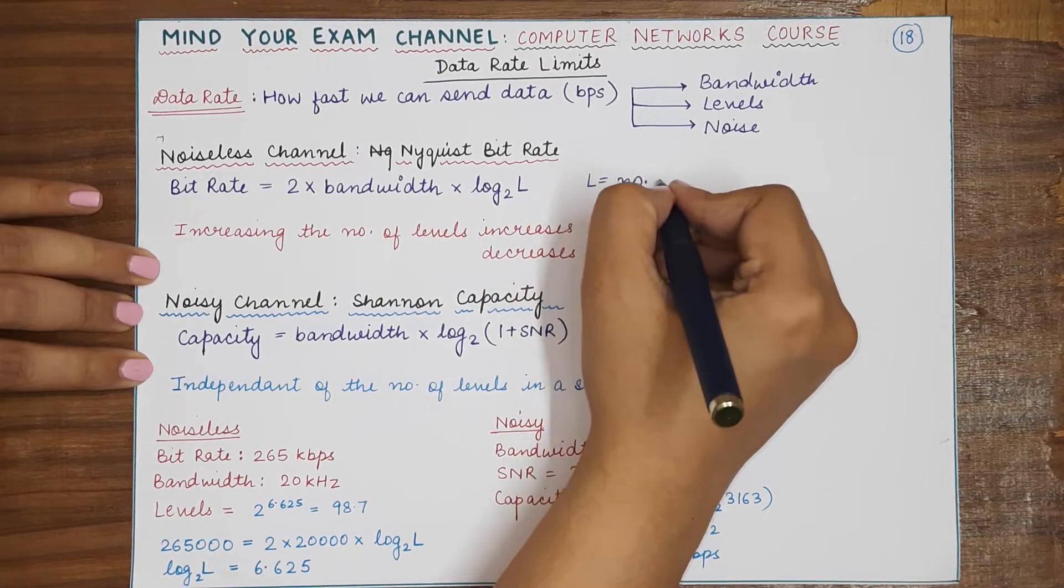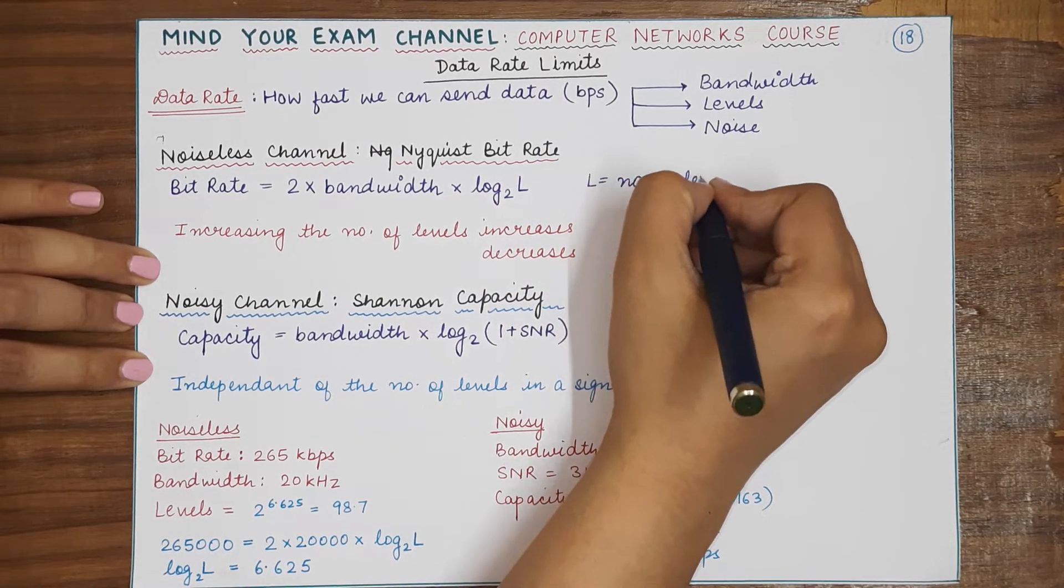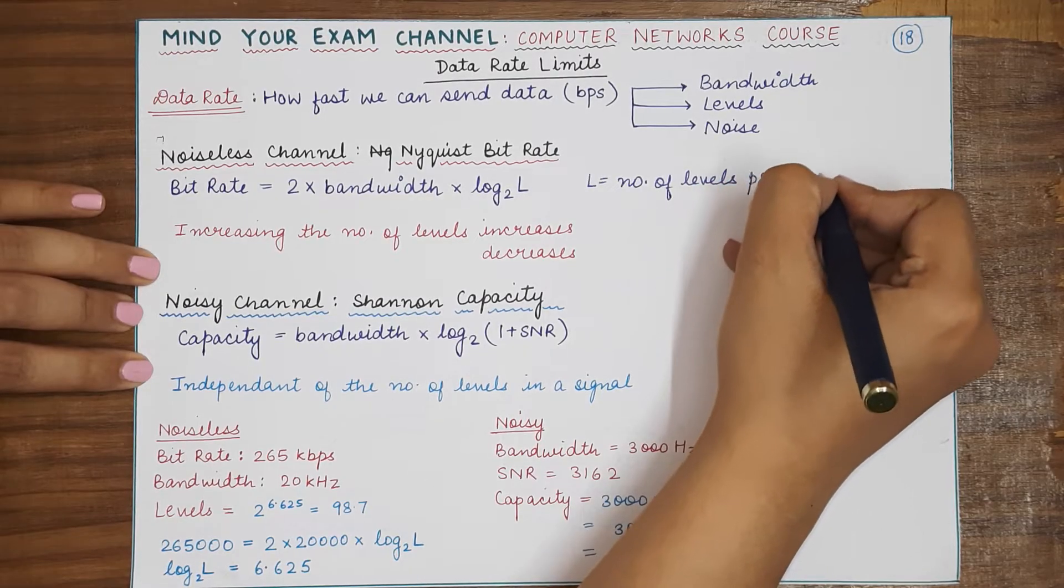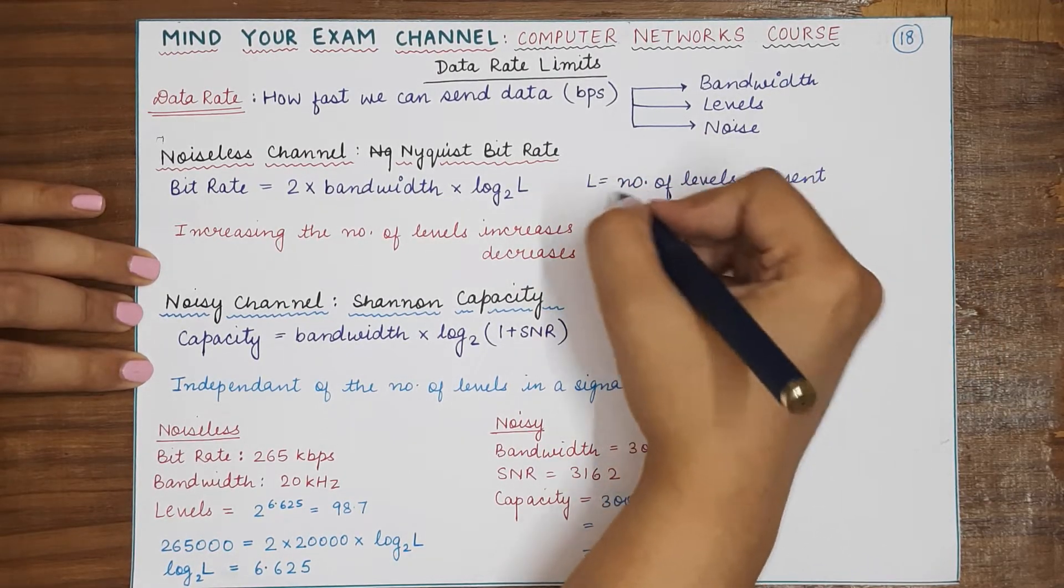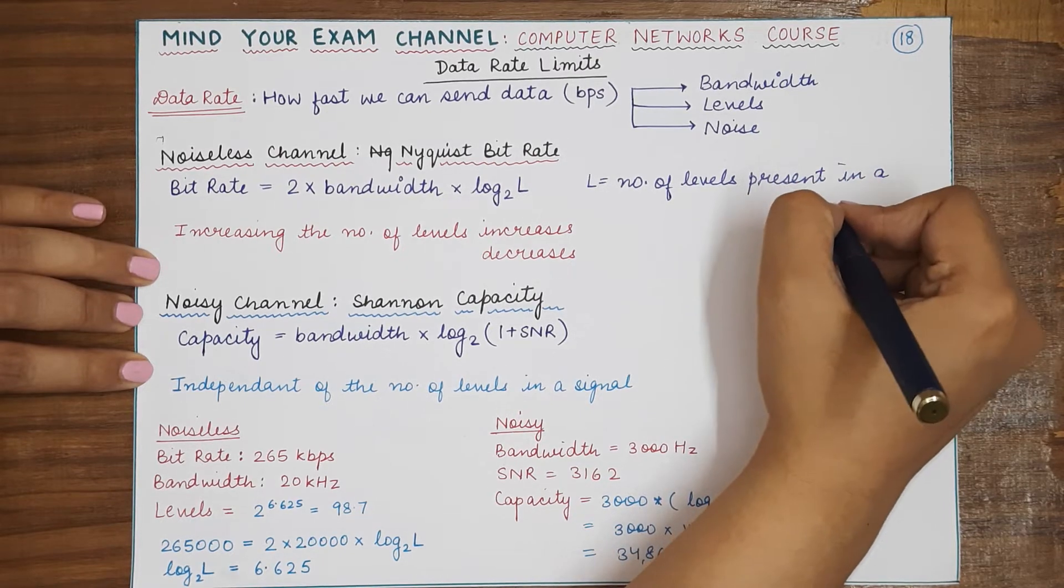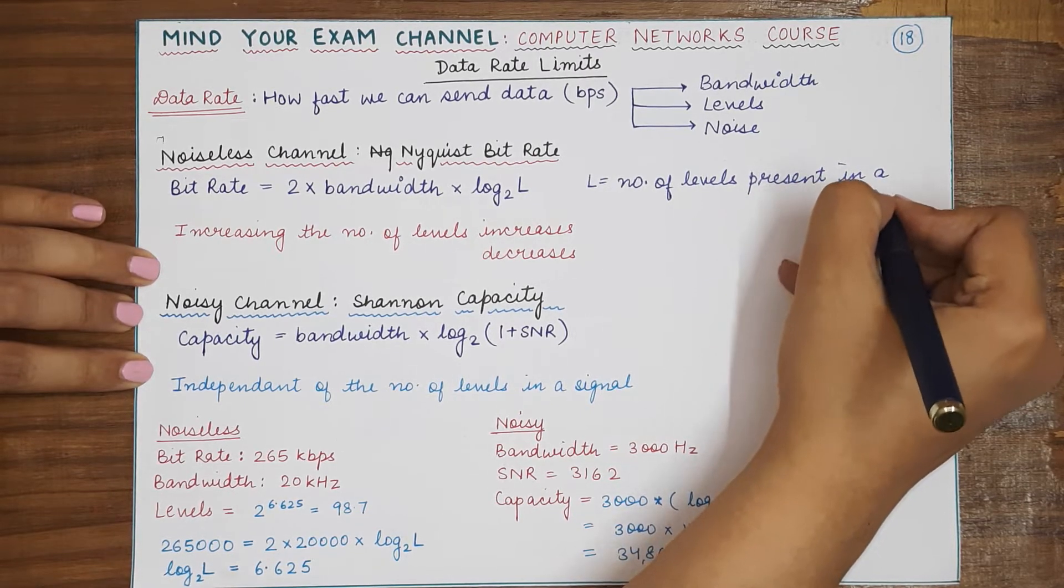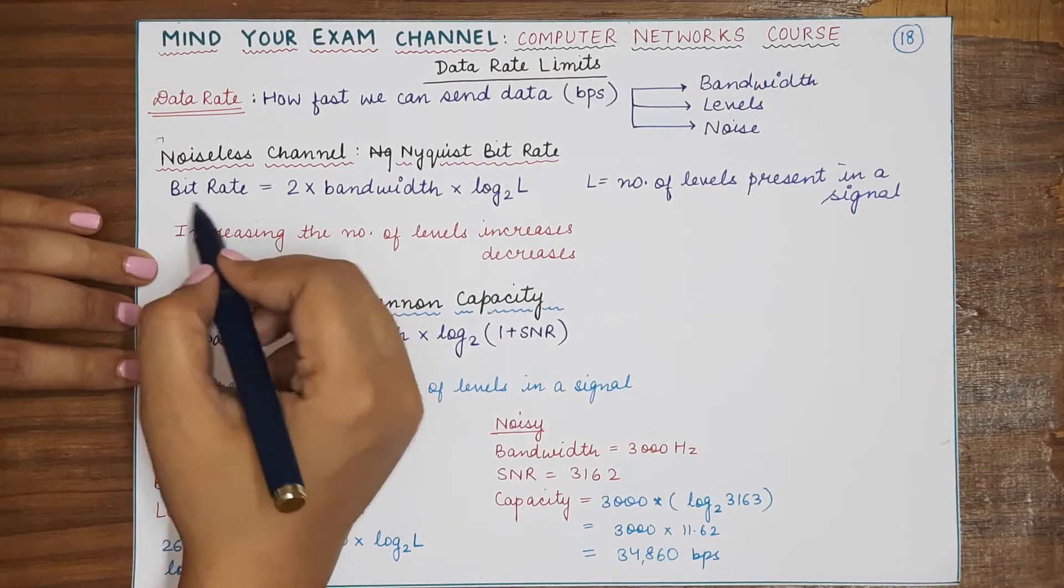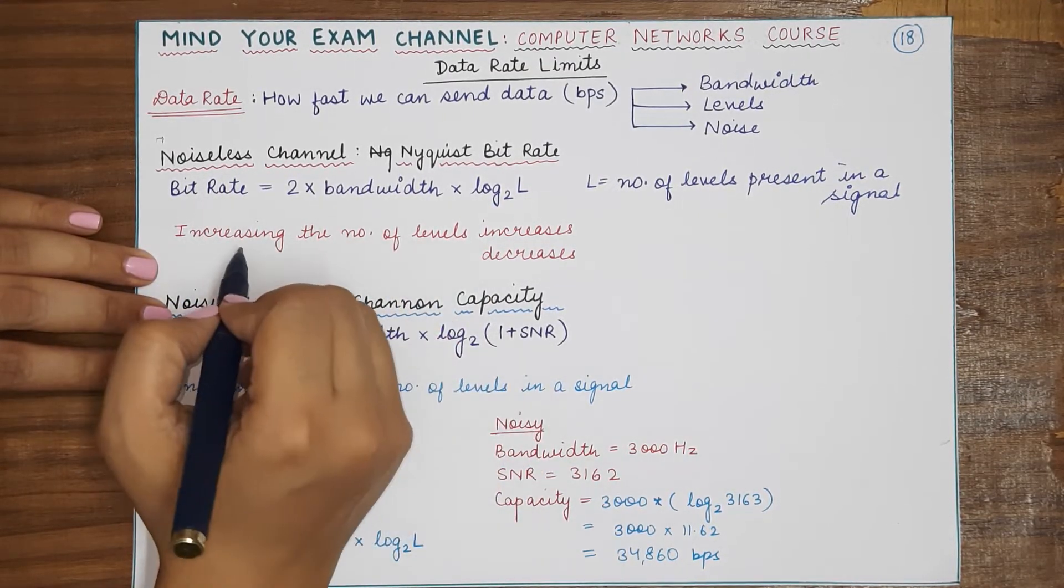Number of levels present in a signal. Now you must notice that since L is directly proportional to the bit rate, one might think that increasing the number of levels increases the bit rate.